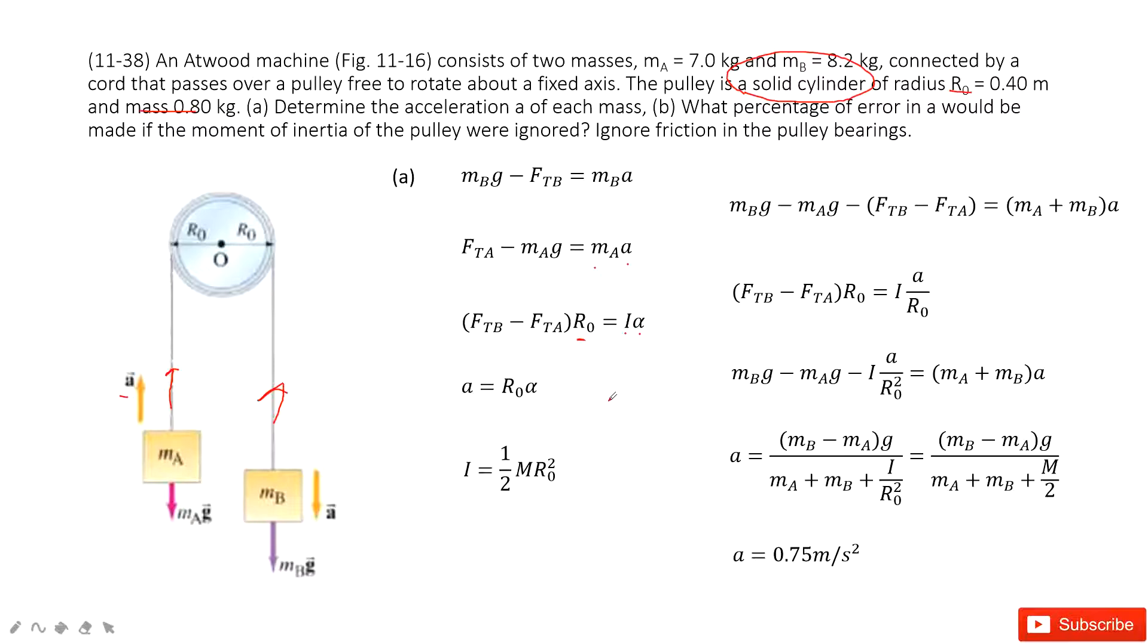Now, can we find the relationship between a and alpha? Sure, we always have this equation: a equals R0 times alpha. And the next one, we need to find I, the moment of inertia for this pulley. It's a cylinder, so we check our textbook: one half mR squared. Now we list all the equations we need.